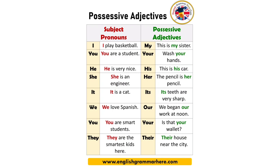Silakan kalian baca kembali dan pelajari kembali kalimat-kalimat yang ada pada layar sehingga kalian bisa mengetahui perbedaannya. Untuk subject pronouns, pasti ada di awal kalimat dan harus dimulai dengan huruf besar. Untuk possessive adjectives, dia ada di tengah kalimat.